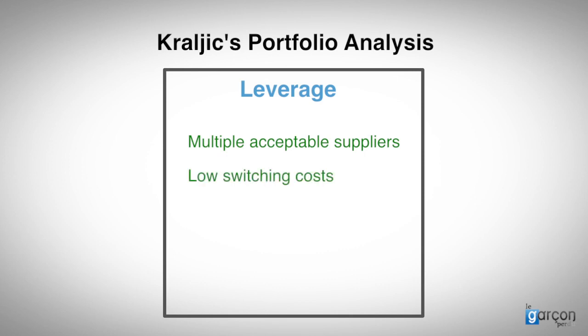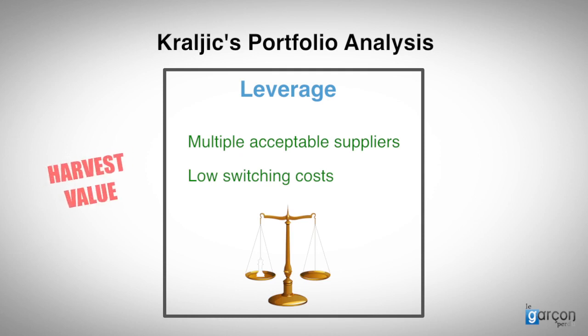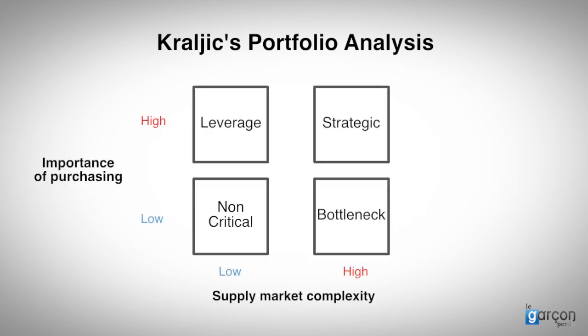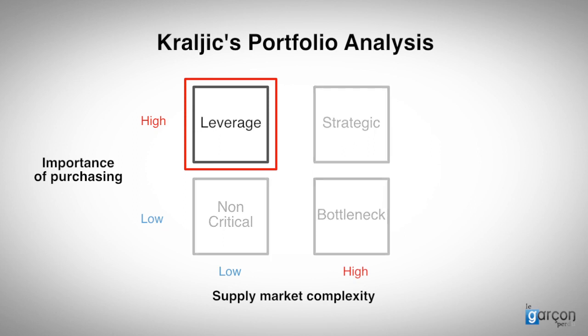So when the buyer enjoys the balance of power, the strategies seek to harvest value from the market. In this case, value equates primarily to cost savings. Yes, I know, price and value are two different things. But when buyers have savings targets, the leverage quadrant is where most of the savings are going to come from.